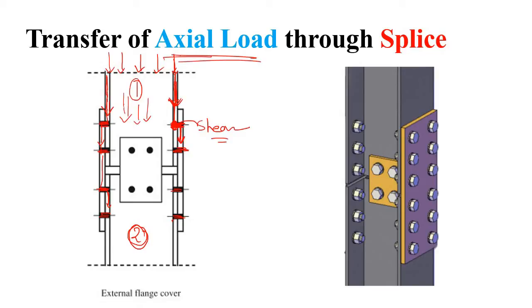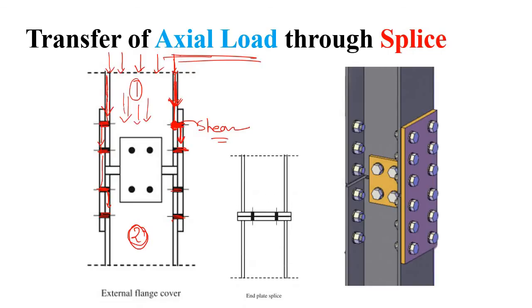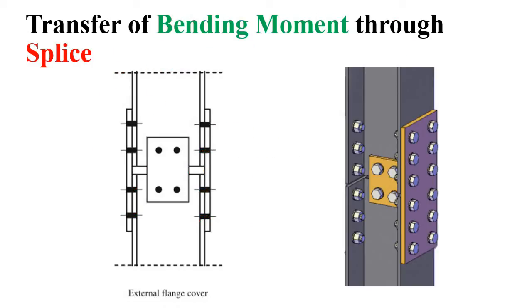In an end plate splice, part one is placed over a plate, and that plate sits on another plate connected to part two — with a void between the two column parts. In this case, the compressive force is transferred directly from part one to part two through bearing action. So you need to check these plates for bearing action.